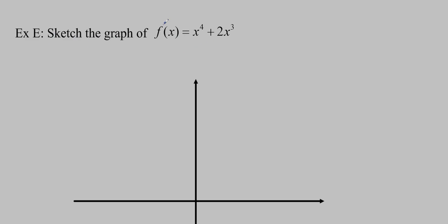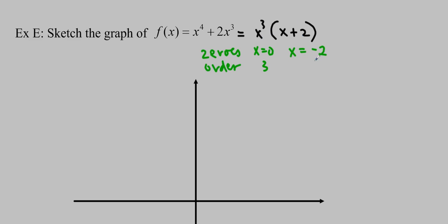For the final example: sketch the graph of f(x) equals x to the 4 plus 2x cubed. This is in standard form — we did this in 3.2 — but it's also easy to factor. We get x cubed times (x plus 2). The zeros are x equals 0 and x equals negative 2, with orders 3 and 1 respectively. The degree is 4 and the leading coefficient is 1. There's no constant term, so the y-intercept is 0.